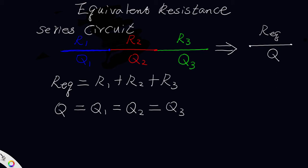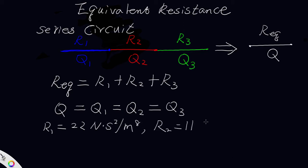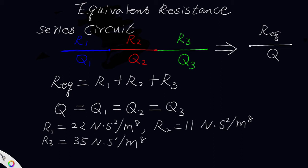Let's look at one example. Say R1 equals 22, R2 equals 11, and R3 equals 25. What is the resistance of the equivalent airway?